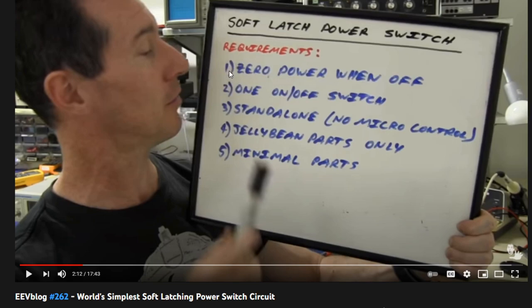So, for example, zero power went off. Mine does actually draw some power, in order of microamps, which might be unacceptable for you, but it is what it is. Then there's one on-off switch, which is correct. Standby, yep, pretty much. Jellybean, yep, only N MOSFETs and minimal parts. Well, asterisk there as well, because it can be done with three transistors for some applications, but in some cases, you may need four transistors, which is not great, but yeah, let's have a look, I guess.